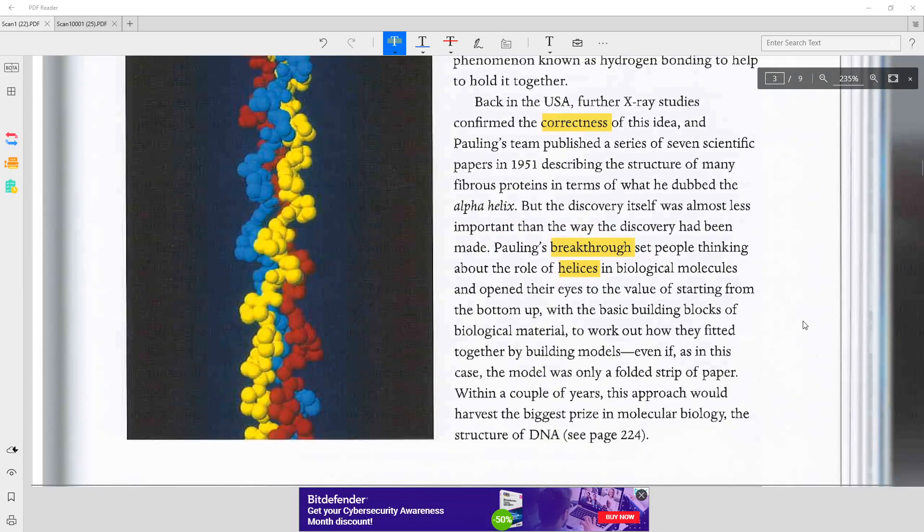Back in the USA, further x-ray studies confirmed the correctness of this idea, and Pauling's team published a series of seven scientific papers in 1951 describing the structure of many fibrous proteins in terms of what he dubbed the alpha helix.